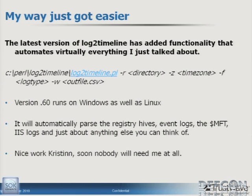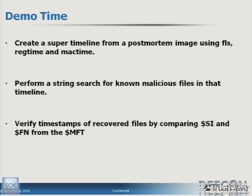So here we are back to log2timeline. The latest version has added functionality that automates just about everything I just talked about, and more. Version 6.0 will run on Windows with some configuration — look for a blog post from Chris Pogue on exactly how to get it working. It will automatically parse registry hives, event logs, MFT, IIS logs — just about anything that logs with a timestamp. You don't even have to point it at a particular file; it does magic number searches and will automatically identify an EVT or EVTX and parse it. It's a pretty amazing tool.